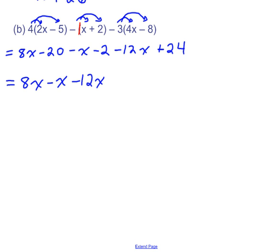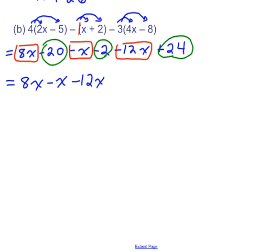If it helps you, you can color code these. So you can put a little red square around all the X terms. And let's say we could put a little green circle around the constants. So you can do that if that helps you. So now we're going to write our constants. So we'll write our minus 20, our minus 2, and our plus 24.